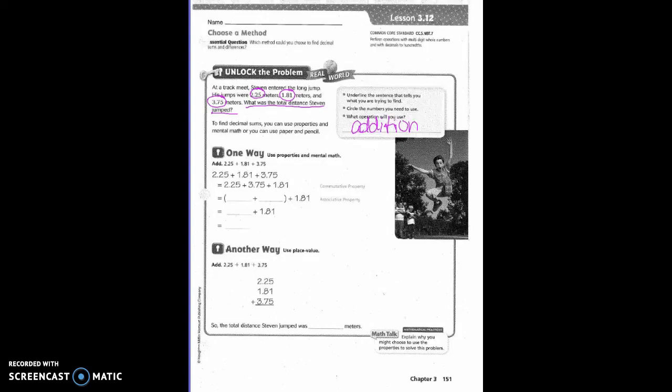To find decimal sums, you can use properties in mental math, or you can use paper and pencil. First of all, they have 2.25 plus 1.81 plus 3.75. Then they rewrote that as 2.25 plus 3.75 plus 1.81. Since they just changed the order, that's called commutative property. Now they put the parentheses. And what type of property is that? Associative. Because they want those things to be associated together and done first.